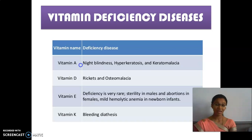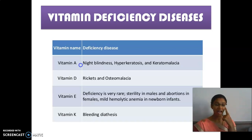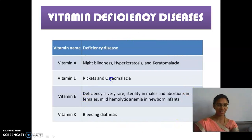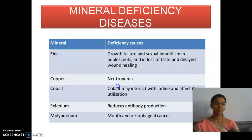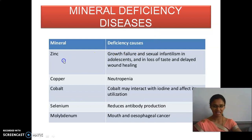And then vitamin deficiency diseases. What diseases are caused due to vitamin deficiency? Vitamin A is important for our eyes, so its deficiency may cause eye diseases. Then vitamin D, vitamin E and vitamin K deficiency diseases. These are some of the mineral deficiency diseases, involving zinc, copper, cobalt, selenium and molybdenum.